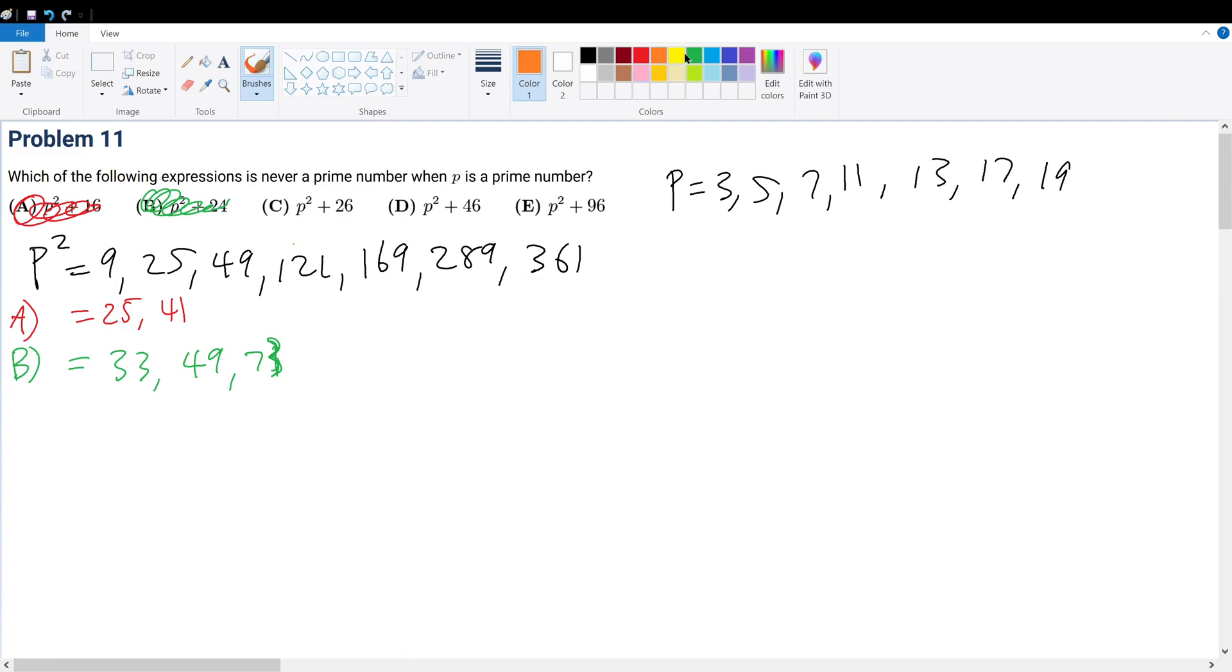Now let's consider for orange, we'll do number C. 9 plus 26, that is 33. No, no, what am I doing? That is 35. 25 plus that is 51. That obviously works. 49 plus that, something ends in 5, so that obviously works.